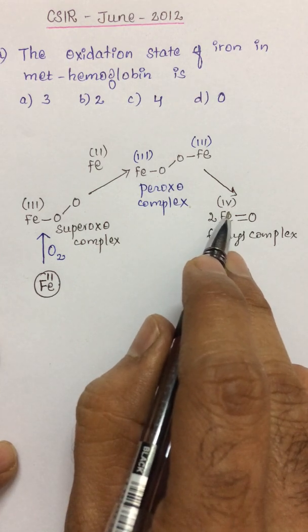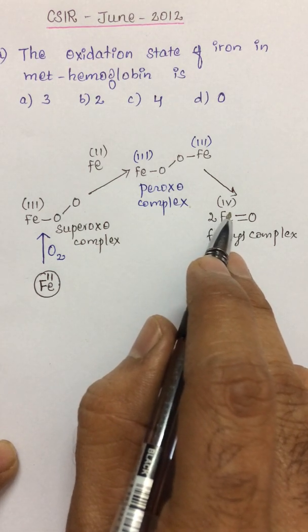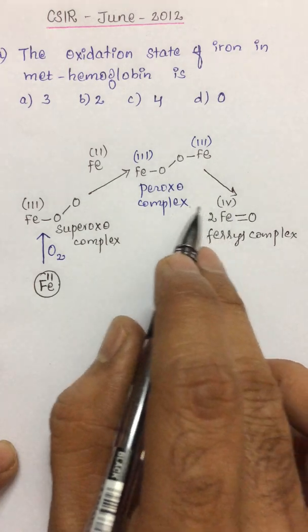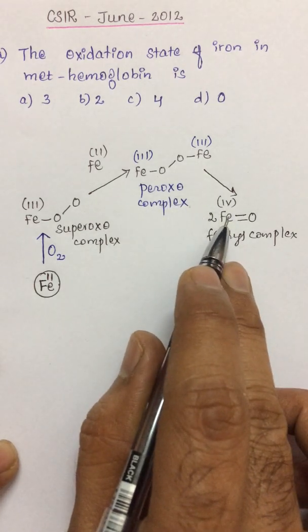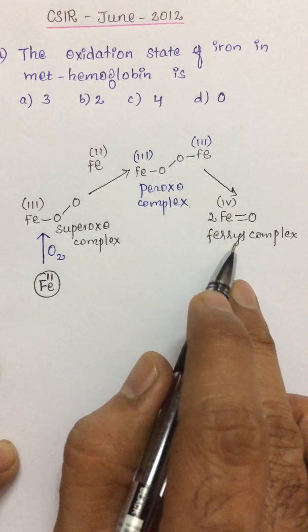The oxidation state of iron in ferryl complex is +4. So this is a very unique oxidation state for iron. Usually we find +2 and +3 for iron, whereas you can also find +4 in this ferryl complex.